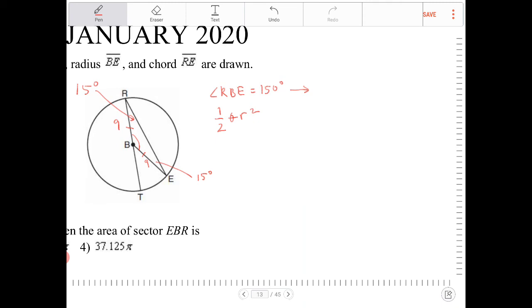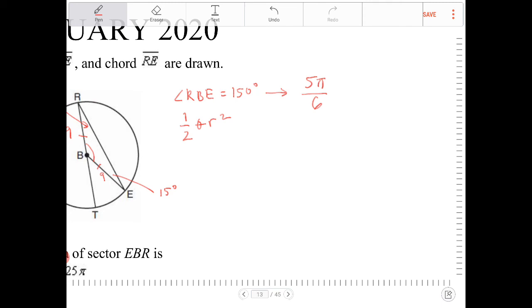So 150 degrees, that is actually the same thing as 5 pi over 6. And how do I know that? Well, that's because I've worked with converting degrees into radians a lot of my life, and that's how I would be able to figure that out.